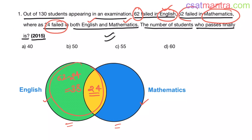And how many students failed in Mathematics? That is 52. That means this whole circle is 52. If it is 24, now this area is 52 minus 24. That is equal to 28.